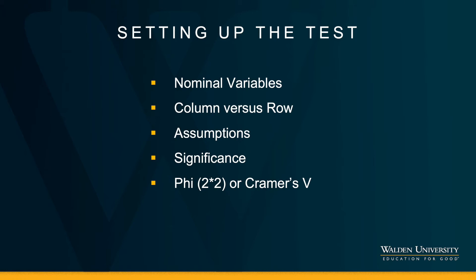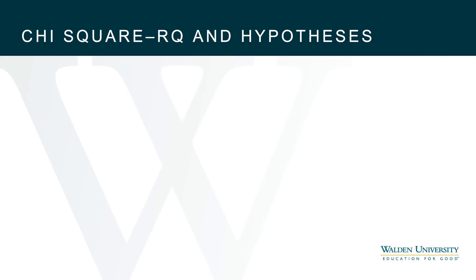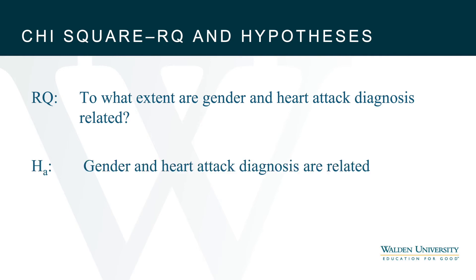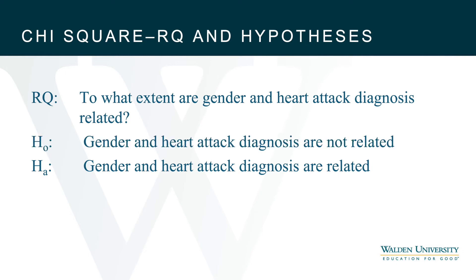The chi-square is a relationship test. My research question example uses two variables: gender and heart attack diagnosis. To what extent are gender and heart attack diagnosis related? The alternative hypothesis states that these two variables are related. The null hypothesis denies that relationship. Now let's get started with an example in SPSS.